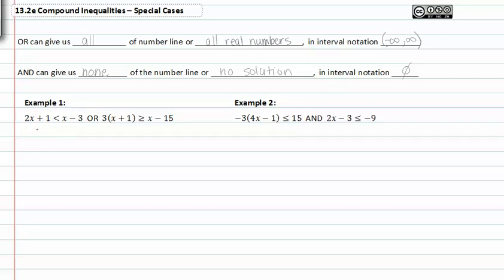So, subtracting one from both sides and subtracting x from both sides, we would get x is less than negative four, or 3x + 3 is greater than or equal to x minus 15.